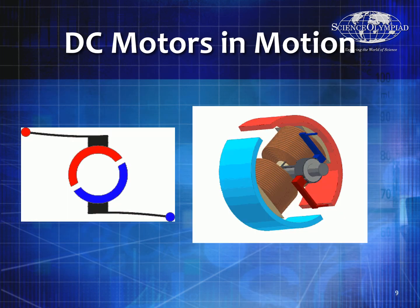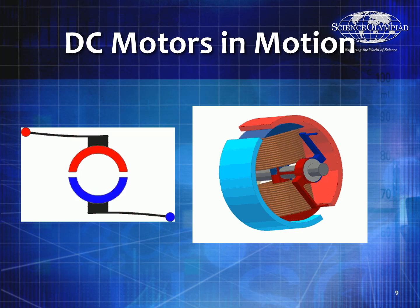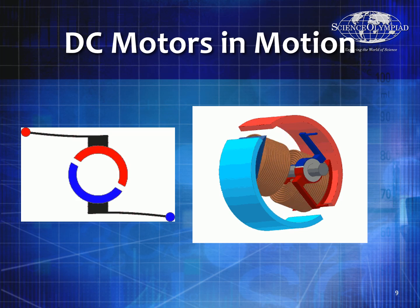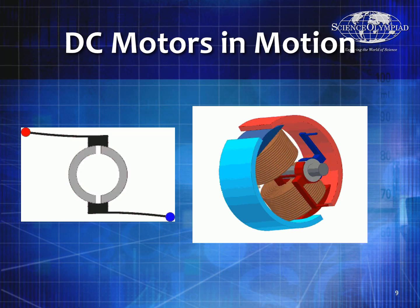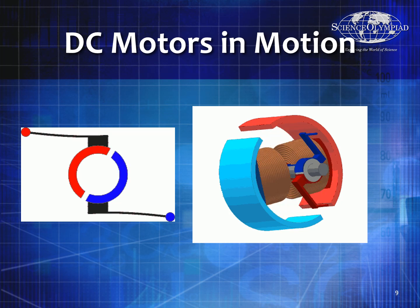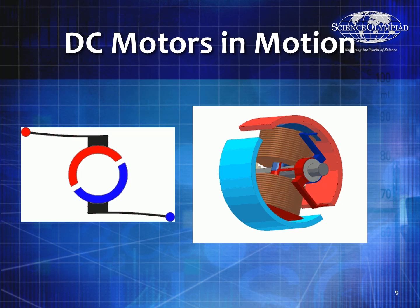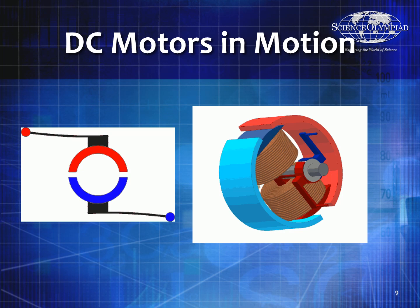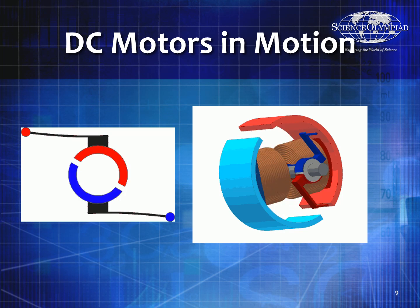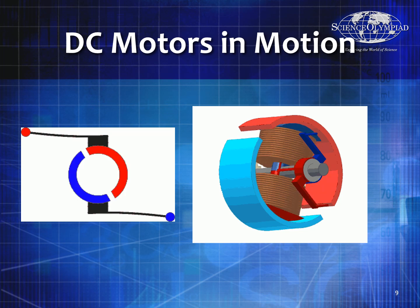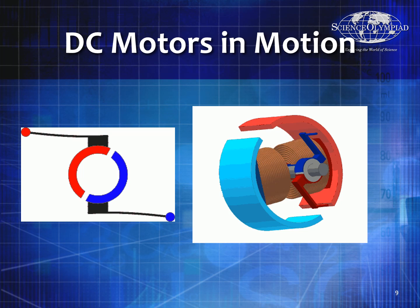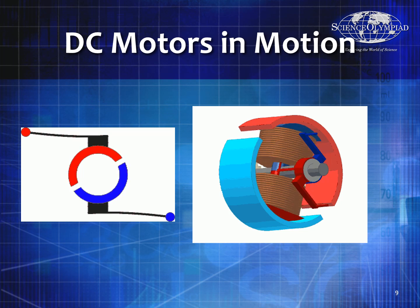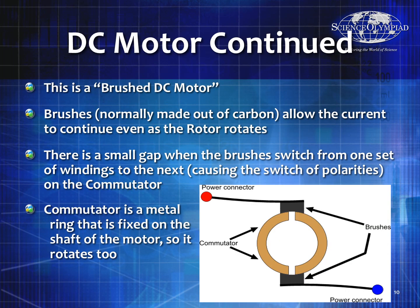The commutator on the left shows how it interacts with the brushes. The current flows one way when turned a certain direction, and then flows a different way when it goes the other way — that's how you get the back-and-forth turning of a motor. On the right-hand side you can see the permanent magnets, the stator on the outside with the windings in between, and the armature spinning around as part of the rotor assembly. The commutator is in the middle with the brushes attached.